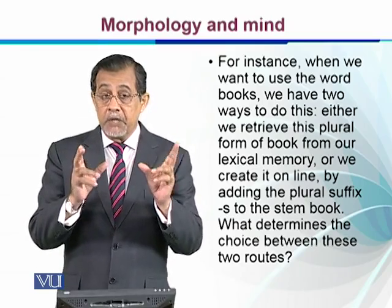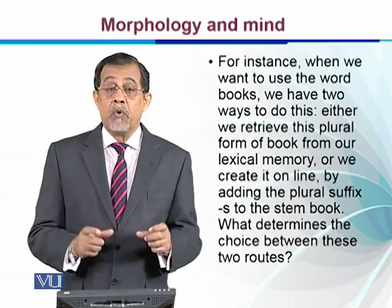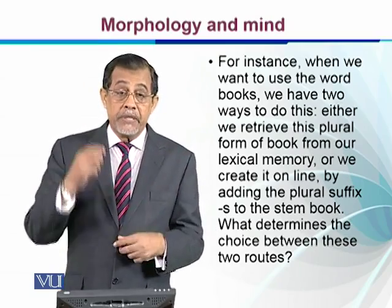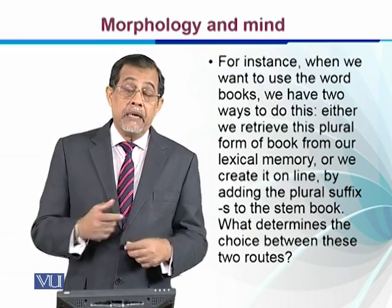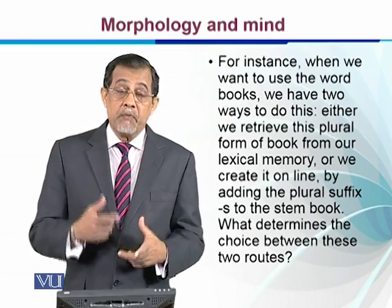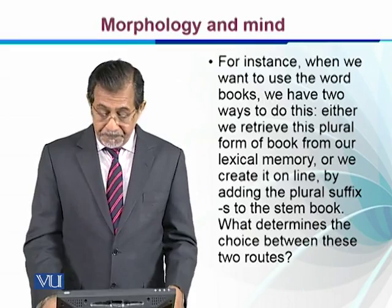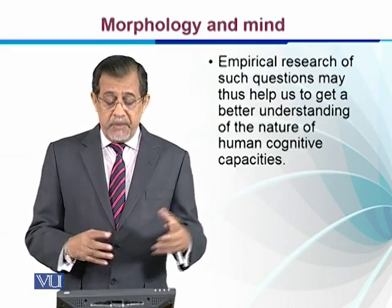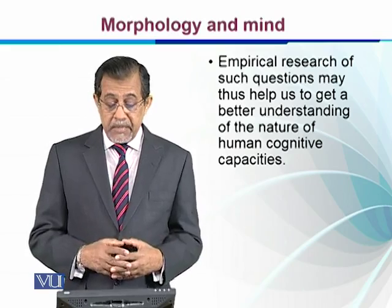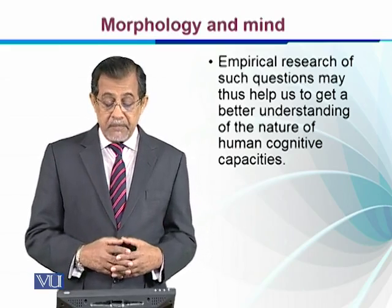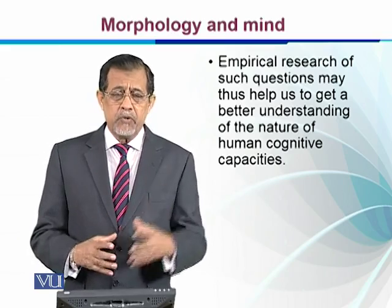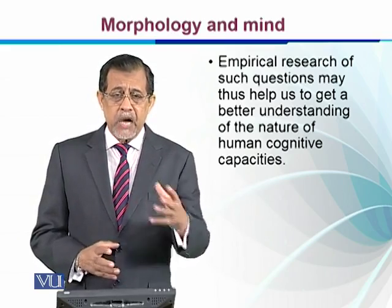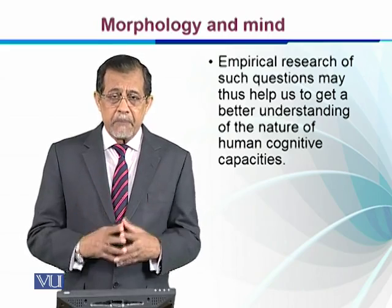Either we have a ready-made plural word, or we have something that we invent or coin as we need it somewhere in our mind. Empirical research on such questions may thus help us get a better understanding of human cognitive capacities — how we recognize and produce words, how we store words, and how we compute words in our mind.